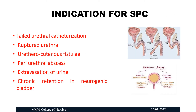What are the indications for suprapubic catheterization? People who have failed urethral catheterization are indicated for SPC. Other indications include ruptured urethra due to trauma or accident, urethrocutaneous fistula, periurethral abscess, extravasation of urine, and chronic retention in neurogenic bladder. These are the common indications for suprapubic catheterization.